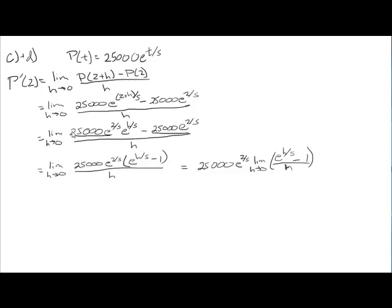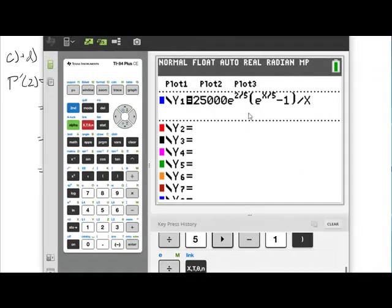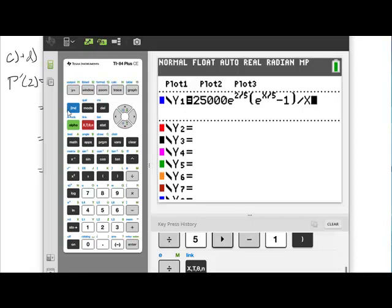For our purposes, we're going to write it all together because we're going to put it into the calculator so we can see what happens as h gets closer and closer to 0. So, here I have an input. And notice I'm using x instead of h because I'm putting it into the calculator. But I put it in for my y equals. And now, I can go to the table.